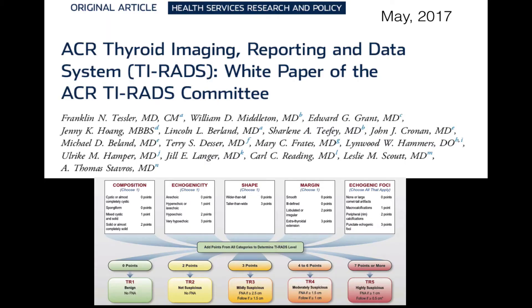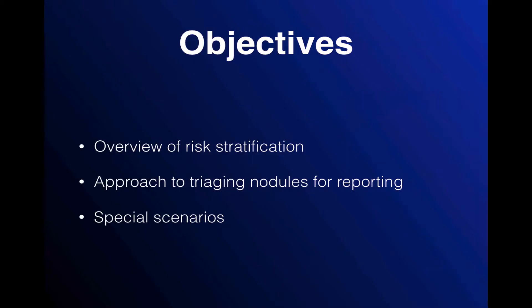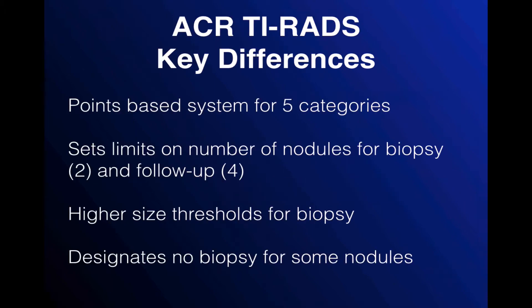ACR TIRADS is a risk stratification system that was published in May 2017. It is a method of identifying nodules that need further workup or biopsy when you see them on ultrasound. In this talk I'm going to give you an overview of how the risk stratification system works, an approach to triaging nodules for workup to save time, and then we'll talk about some special scenarios. There are multiple risk stratification systems out there, but ACR TIRADS differs in several ways.